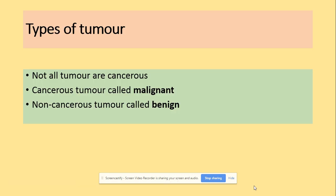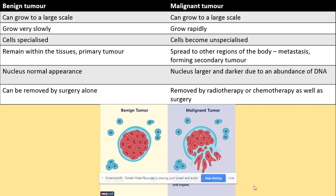There are differences between two types of tumour. The cancerous one is called malignant and the non-cancerous one is called benign. Both can grow to a large size, but benign tumours grow slower than malignant tumours. Cells remain specialised in a benign tumour but become unspecialised in a malignant tumour. The biggest difference is that the malignant tumour can spread — this process of spreading is called metastasis. If it spreads from one location to another, it causes a secondary tumour. A benign tumour stays in one location.